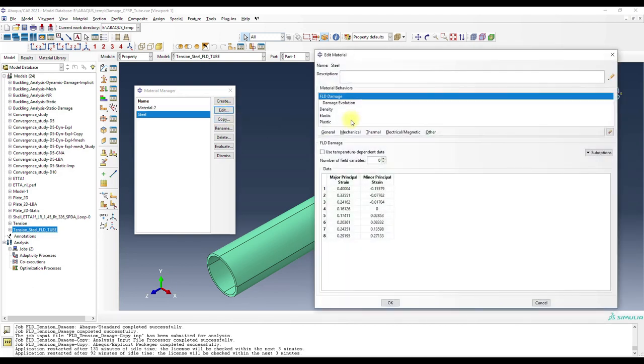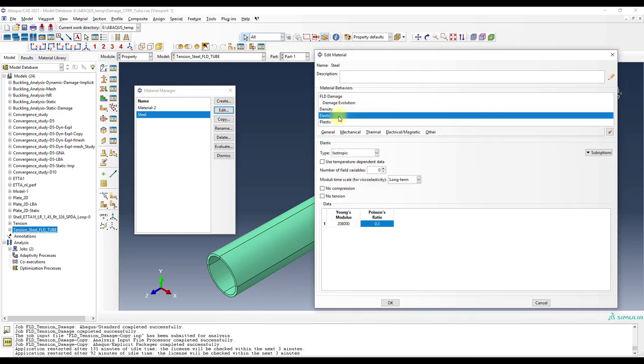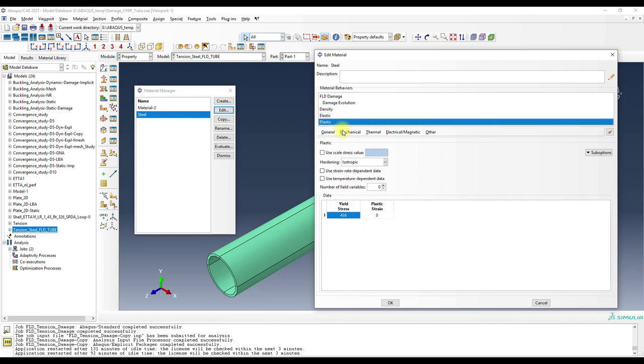And the complete model description would look like this. We have here the FLD damage parameters, damage evolution, density, elastic parameters, and plastic parameters.